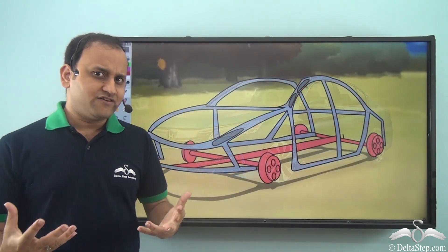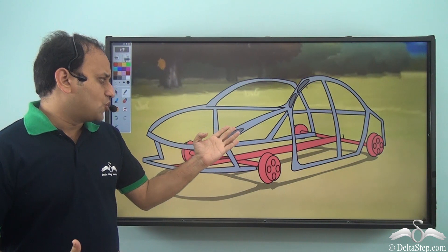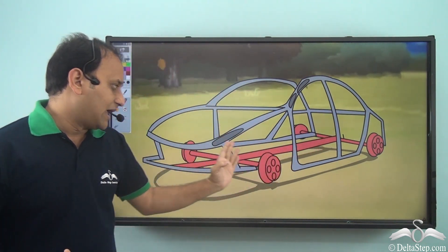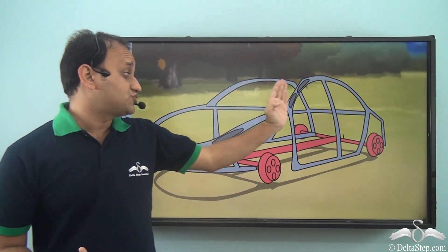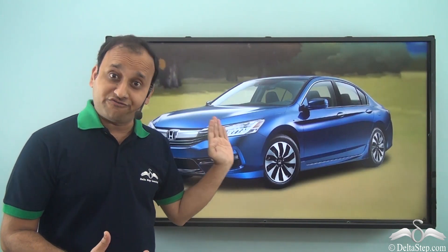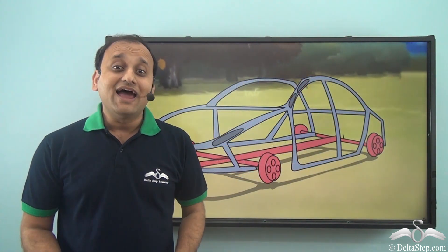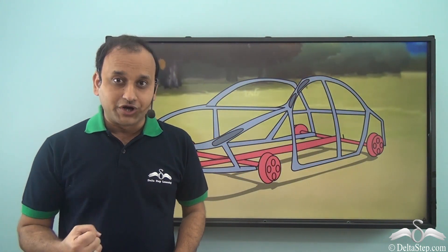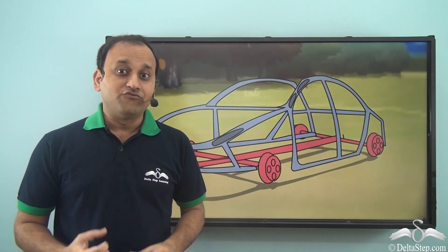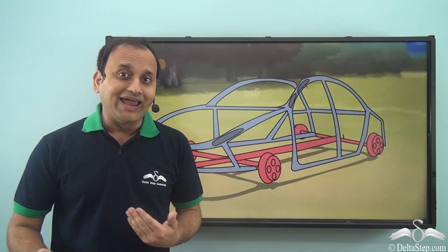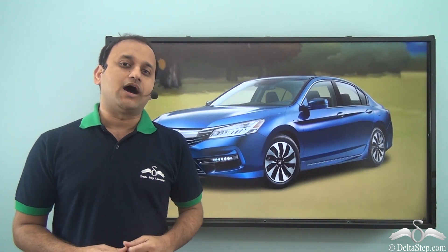Not only a house — even a car has a very strong structure inside it. Because of this strong structure or frame, the car has a sturdy body which can protect all the inner parts of the car.